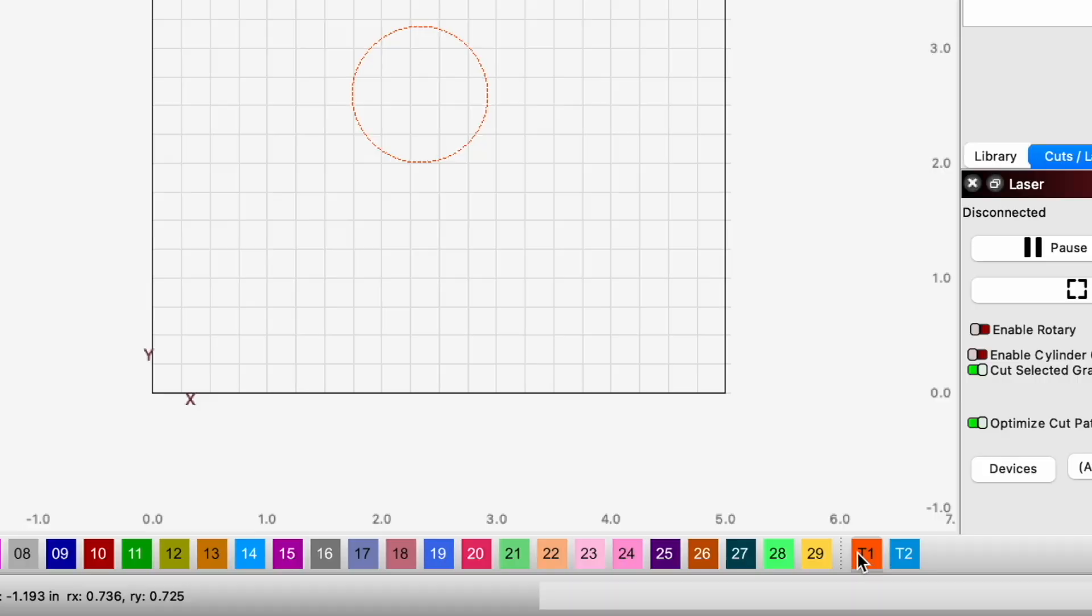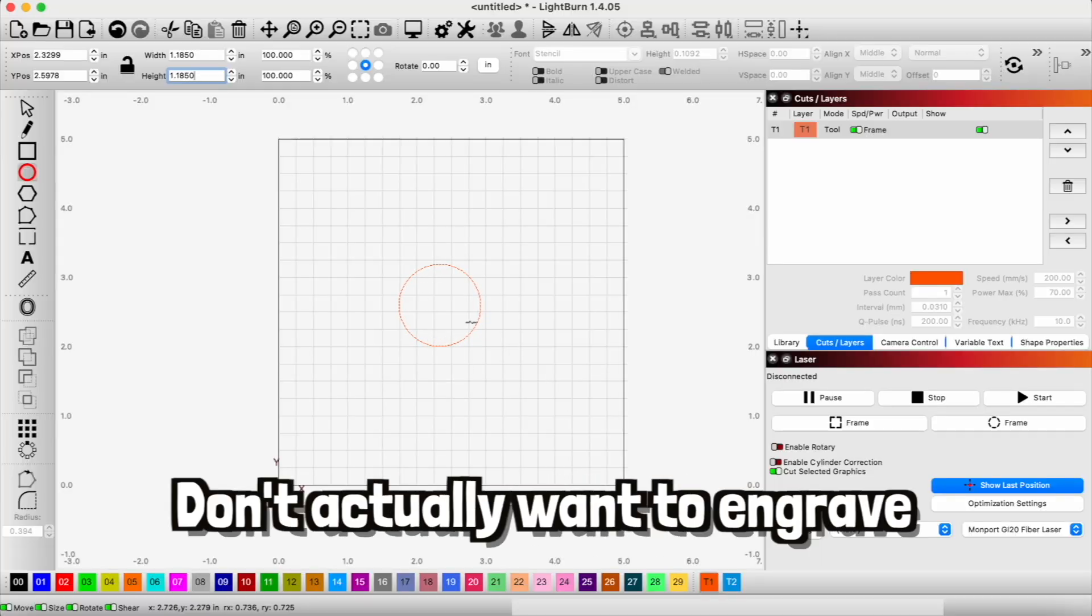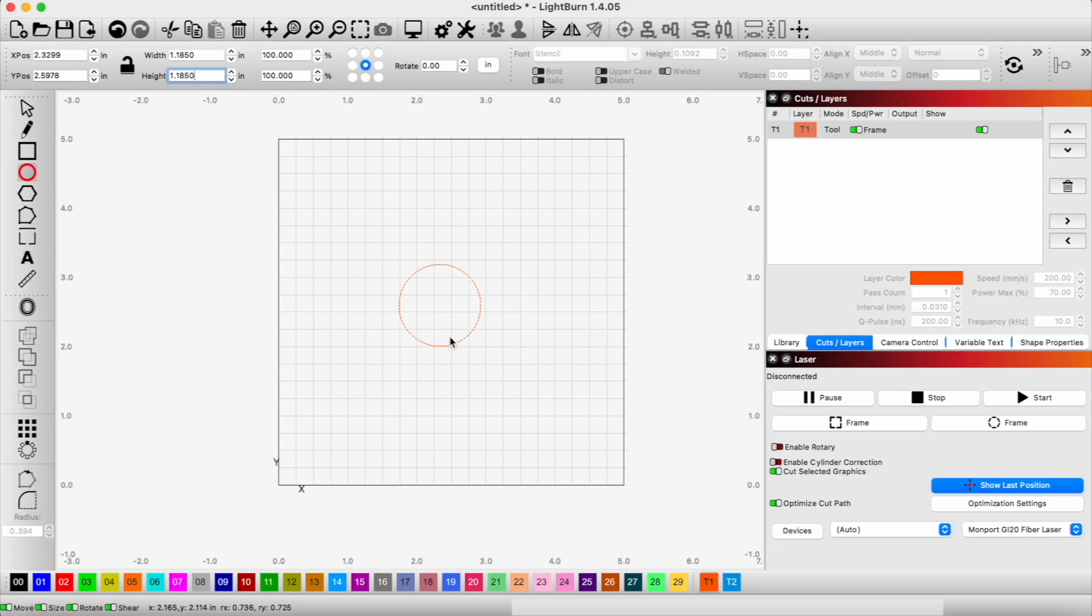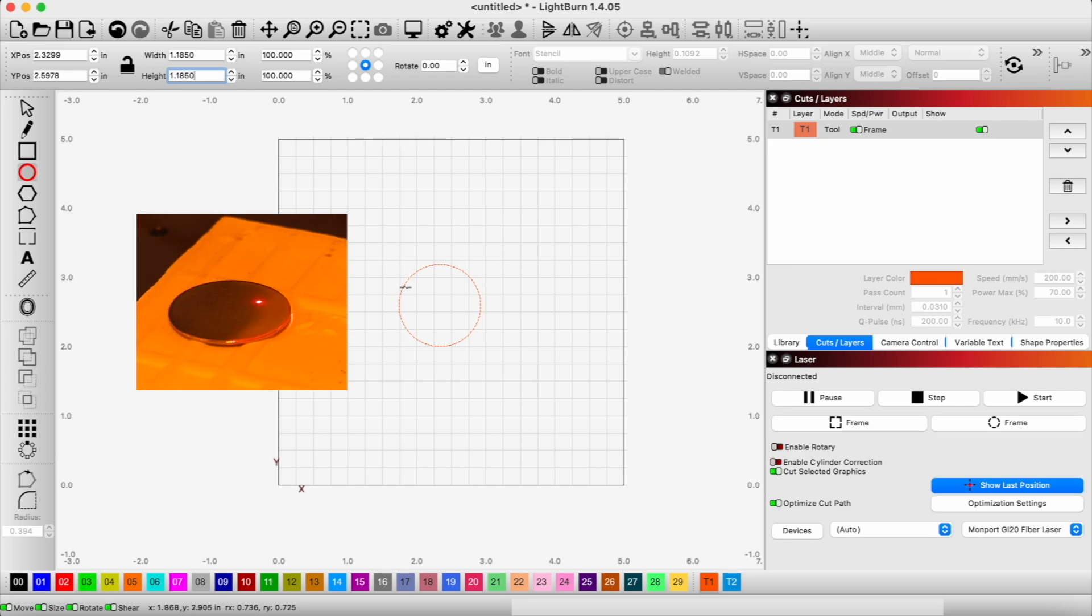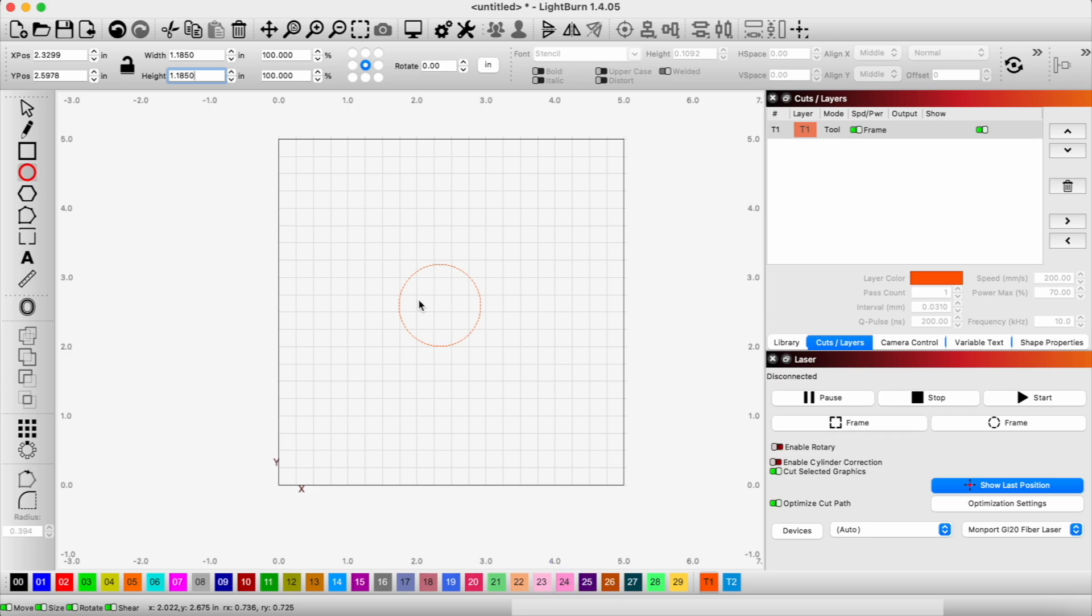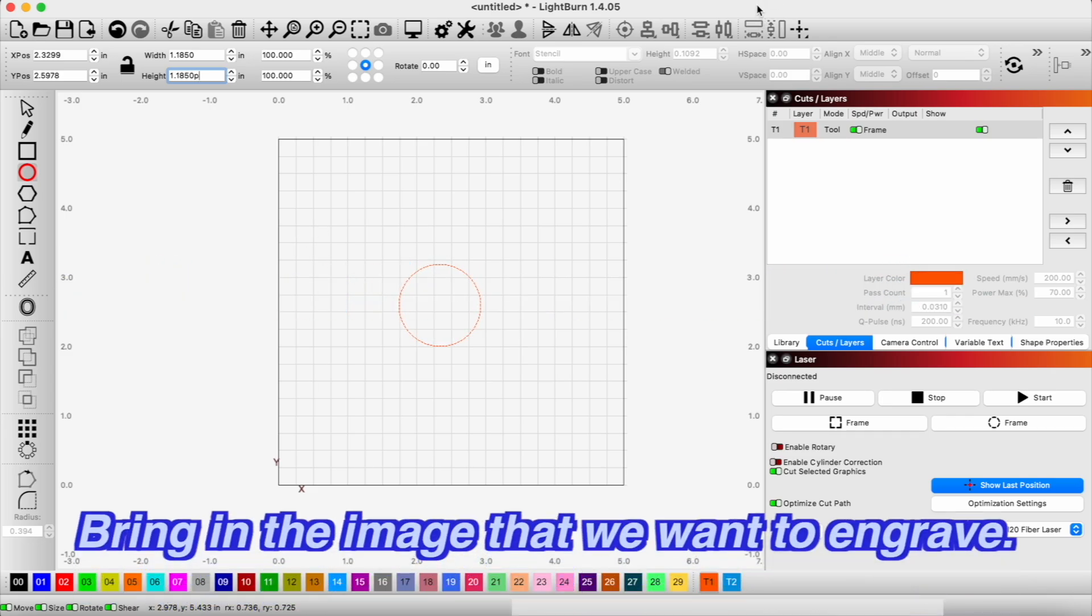And then we're going to put this on the toolpath because we don't actually want to engrave anything here. It's really just so that we can see an outline or contour of our engraving project when we get this in the fiber laser. So the next thing we want to do is bring in our image that we want to engrave.